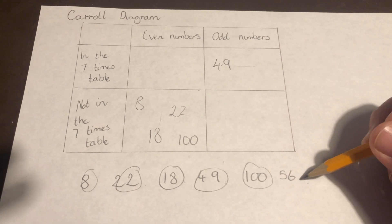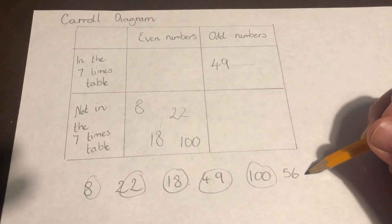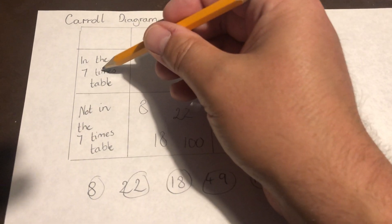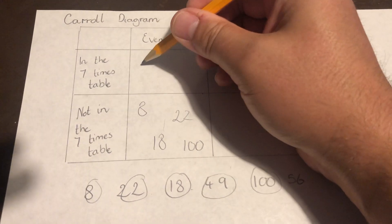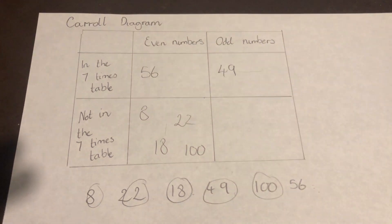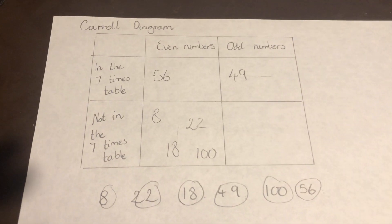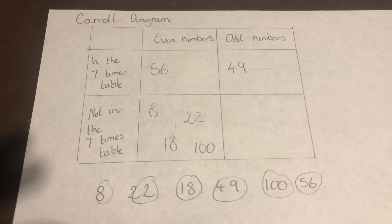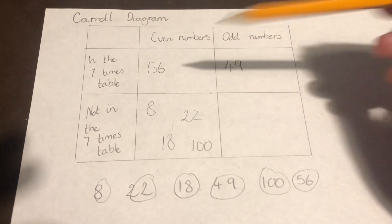And finally, I've got 56. 56 is in the seven times table, and it is an even number, so that will go in there. So I've placed all the numbers in that Carroll diagram. Carroll diagrams are the ones with a grid like this.